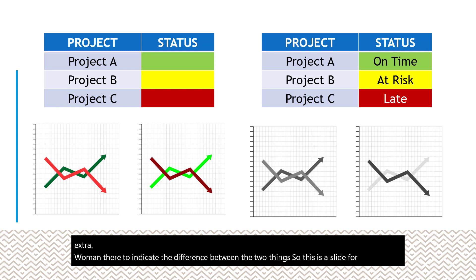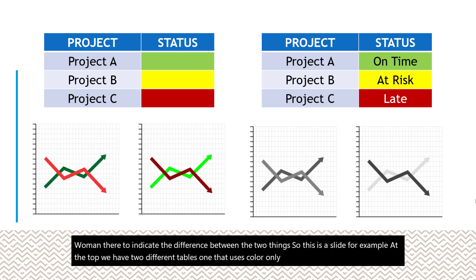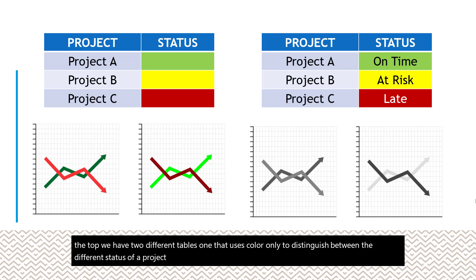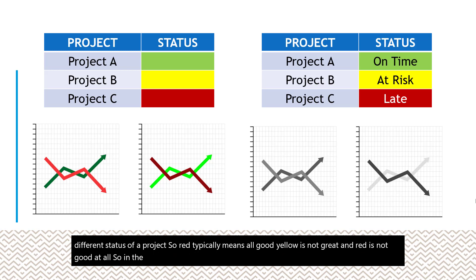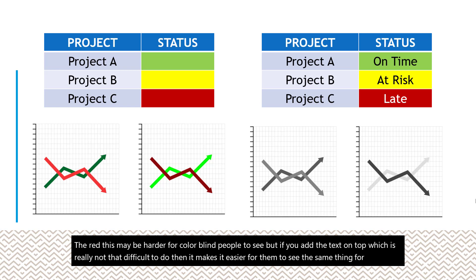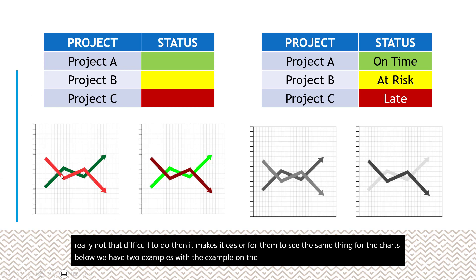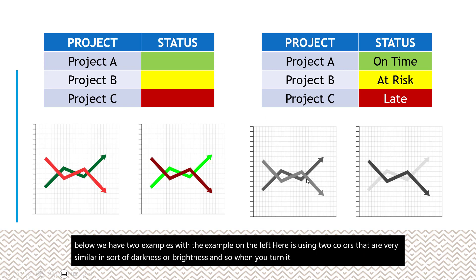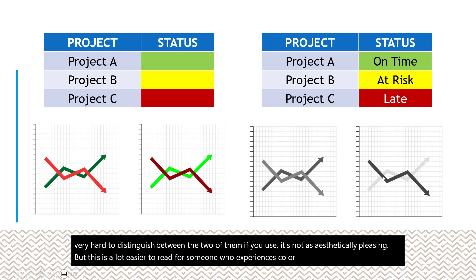Here's an example slide. At the top we have two tables — one that uses color only to distinguish between different project statuses, where red typically means not good at all, yellow means not great, and green means all good. In the example on the right, I've added text on top as well. For the charts below, the left example uses two colors that are very similar in brightness. When you turn it to grayscale it's very hard to distinguish between them, whereas the right example uses contrast in brightness, making it much easier to read for someone experiencing colorblindness.